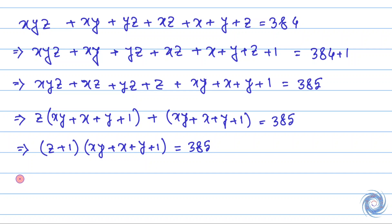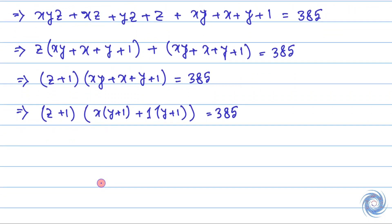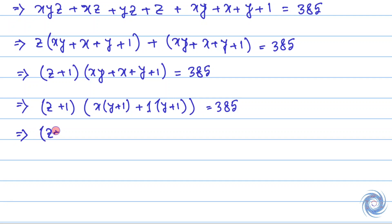And from here we have... So finally we have (z plus 1) times (x plus 1) times (y plus 1) equals 385.